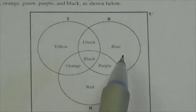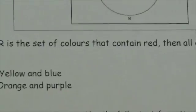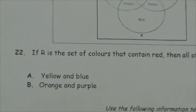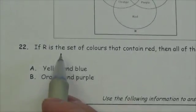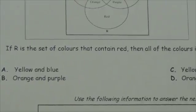So we have yellow, green, blue, orange, black, purple, and red. Now let's take a look at the question here. I'll just zoom out a little bit. If R is the set of colors that contain red, then all of the colors in the complement of R are...